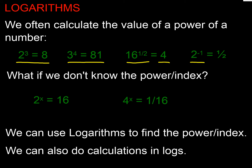Negative powers give us a reciprocal, so it's 1 over 2. But what if we don't know what the power is? For example, 2 to the power x equals 16 — we'd want to find what x was. Or 4 to the power x is a sixteenth — we'd want to know what the power is. We need a method for doing it, and this is called logarithms. It's like an inverse power function.